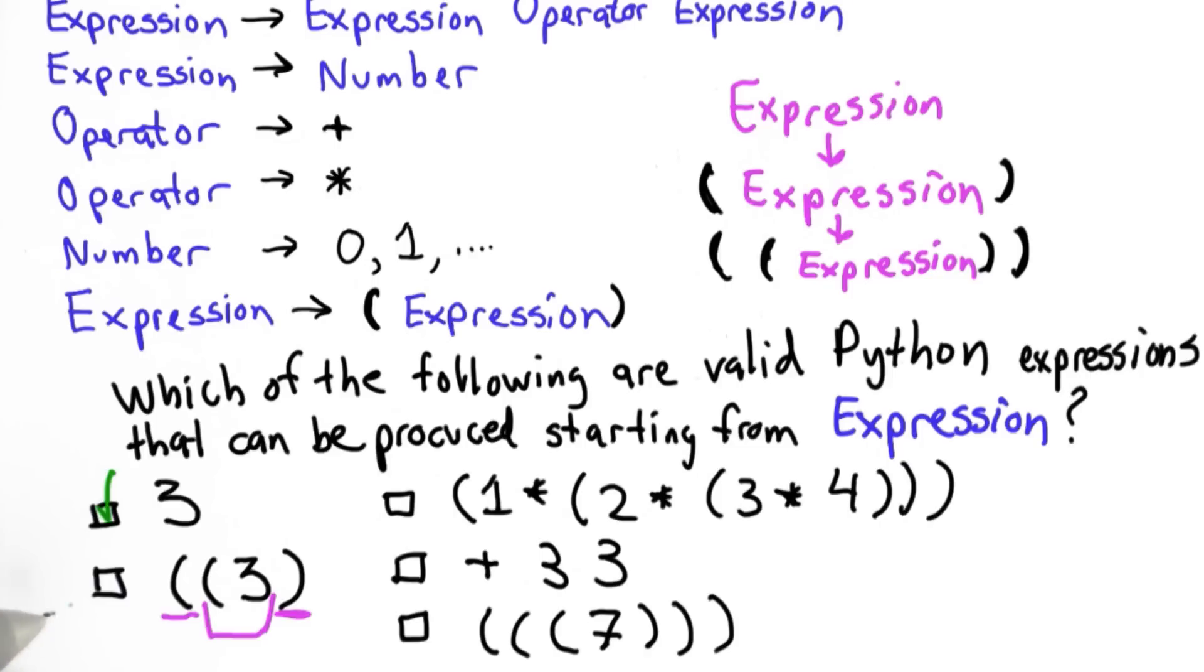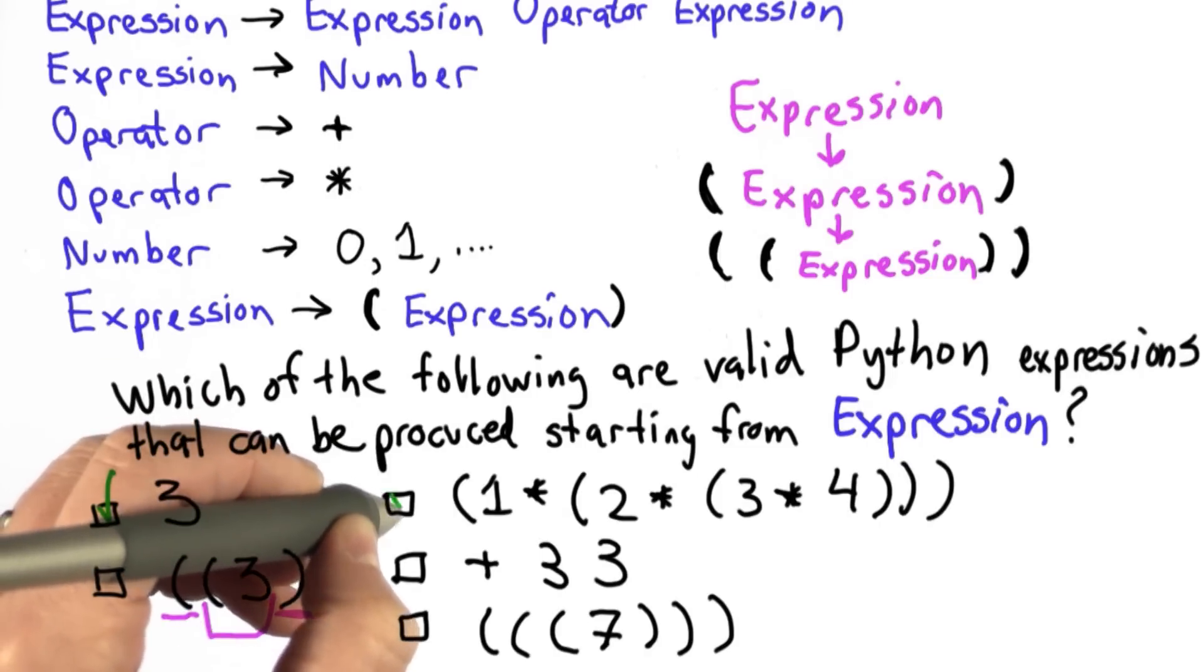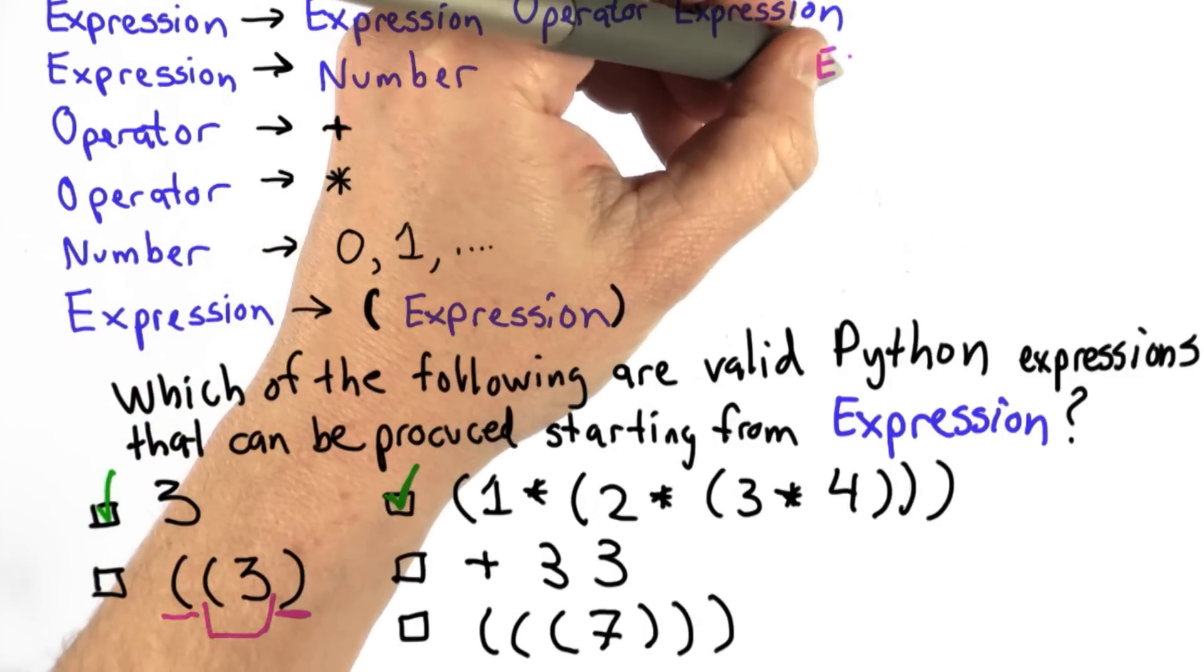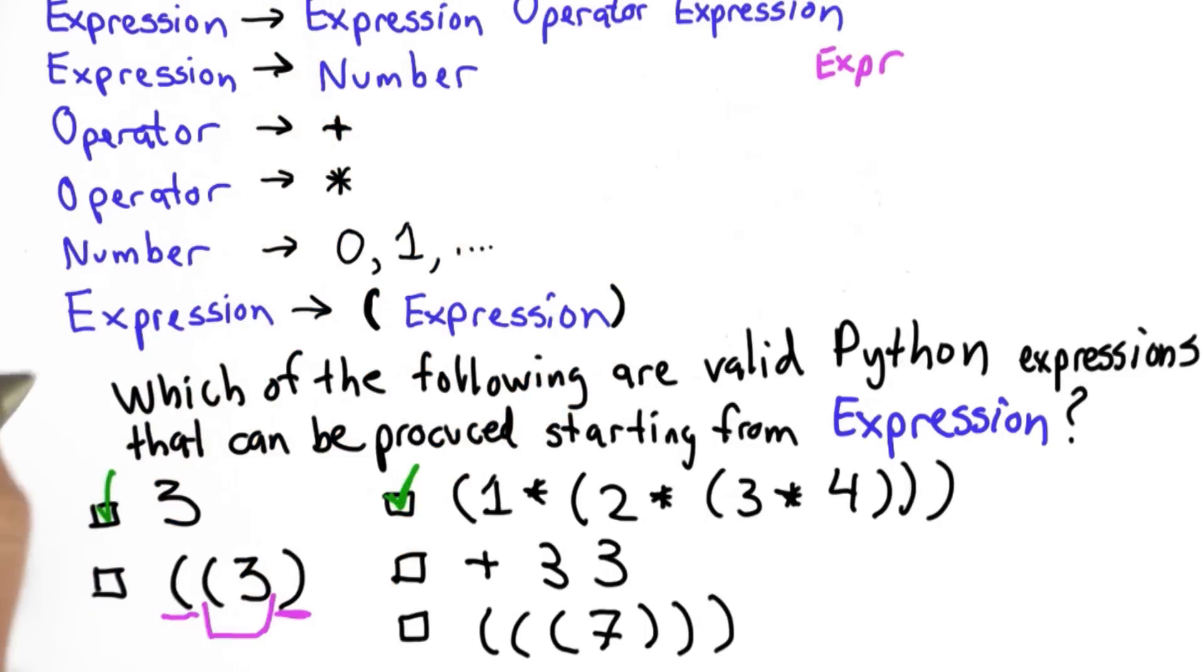We can produce the third one. This has many nested expressions. We have three parens that are open, but we have balancing close parens. And the way we could derive this expression, we'll start with one expression. That's our starting point.